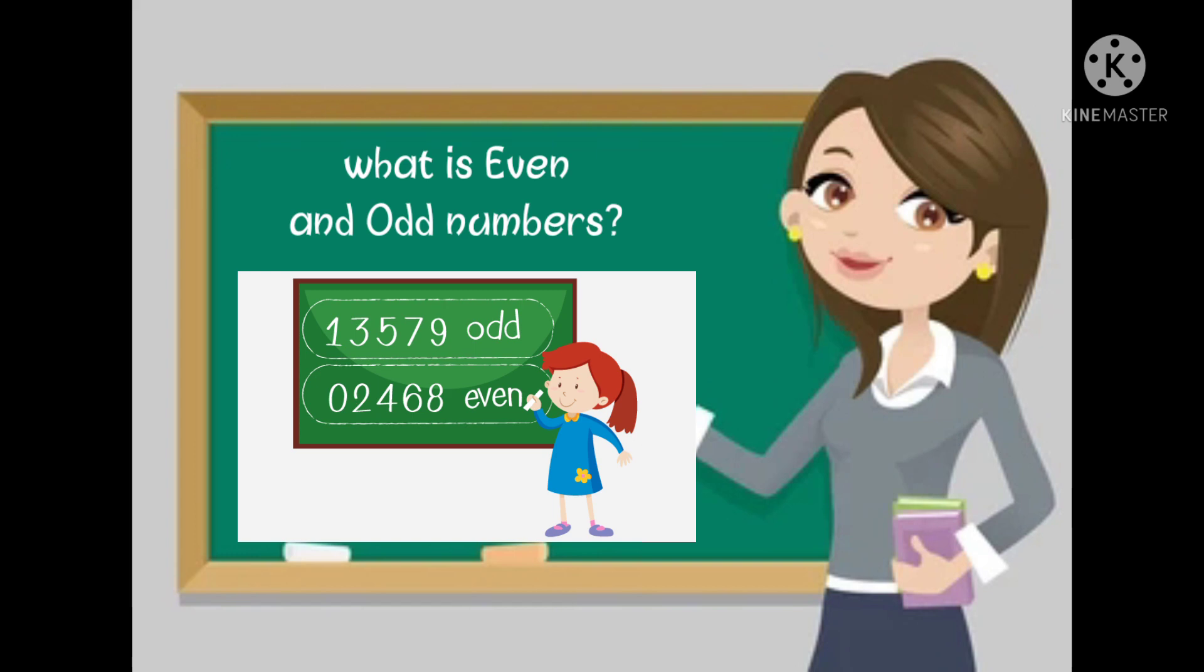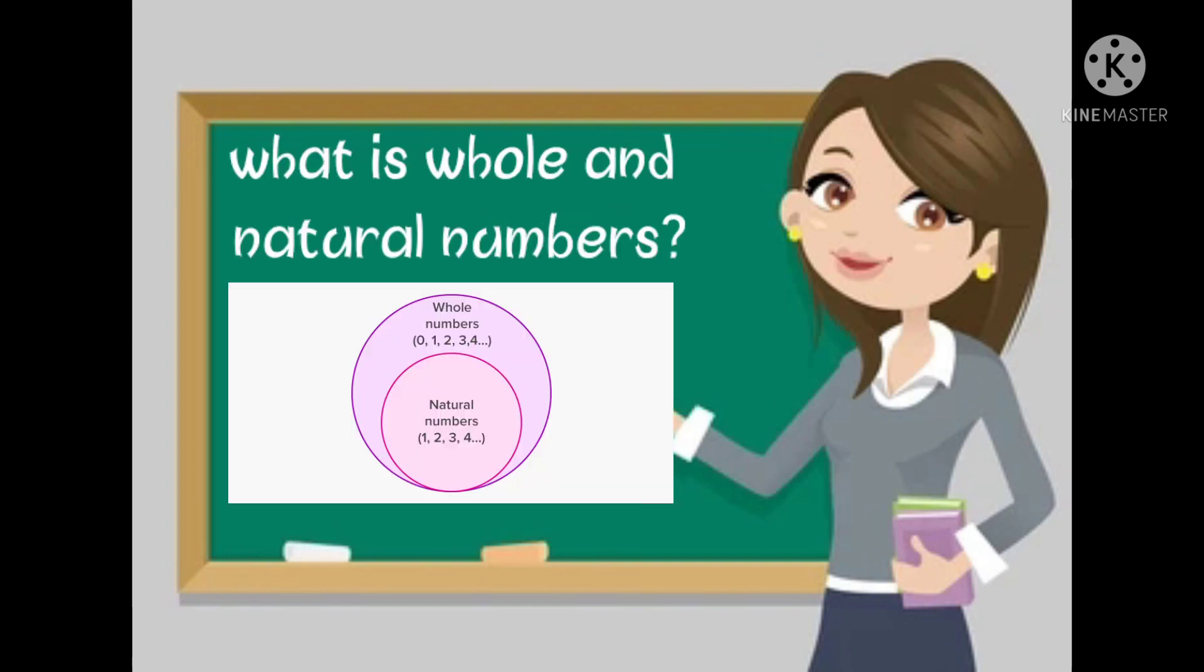What is whole and natural numbers? Let's see. First, whole numbers start from 0 and go on to infinity, so whole numbers include all positive numbers along with 0. Positive integers also have a special name: they are called natural numbers, which include all positive integers starting from 1.